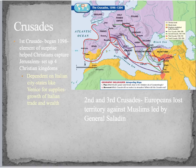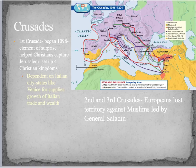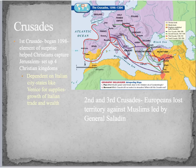The first crusade began in 1098. Because the Christians had the element of surprise — the Muslims didn't know they were coming — they were initially successful and set up four small Christian kingdoms. If you look at this map, you can see the first crusade is represented by purple lines going through Constantinople and then down into the Middle East toward Jerusalem. These are the areas the Christians were wanting to conquer, and initially they were successful.